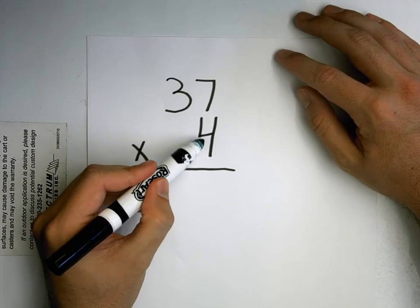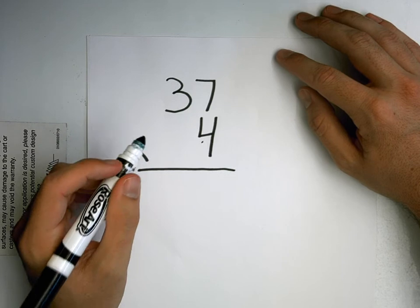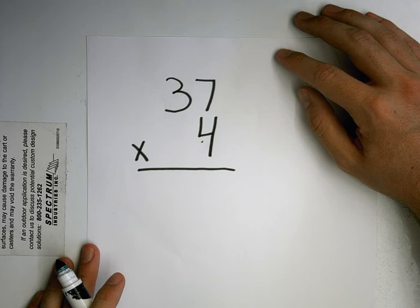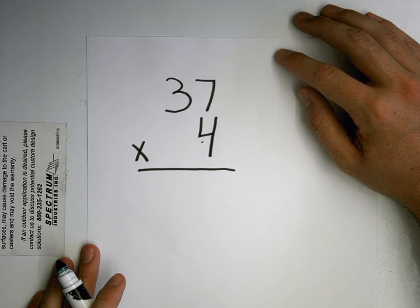So first I have four times seven. Can someone raise their hand and tell me what four times seven is? Nathan. Twenty-eight. Twenty-eight, that's right.